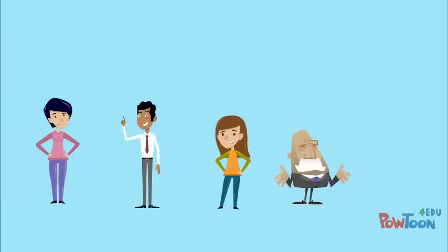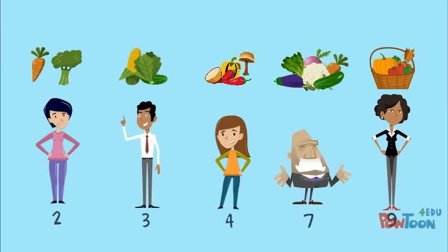We're going to use an example involving the number of vegetables five of our friends have in their fridges. They have 2, 3, 4, 7, and 9 vegetables.